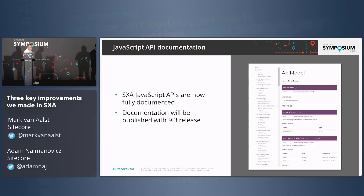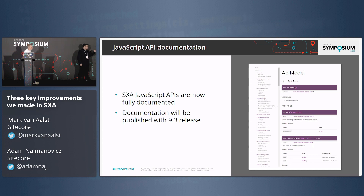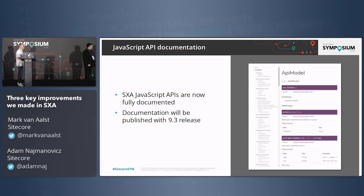In a future version, we plan to refine this so that every component has proper APIs. On accordion, for example, you'll be able to say 'I want to hook when an accordion section is expanded or collapsed, and I want to do something or block it' — to be able to create frontend applications. The API that is here is already very rich. Every component allows you to hook on initialization and you can provide all of that functionality already. We'll just provide more granular events in the future.